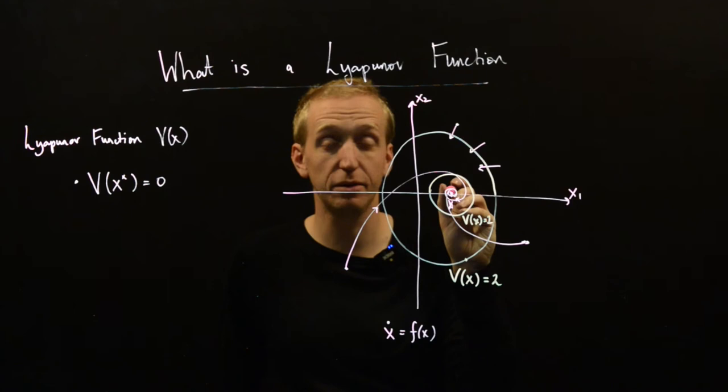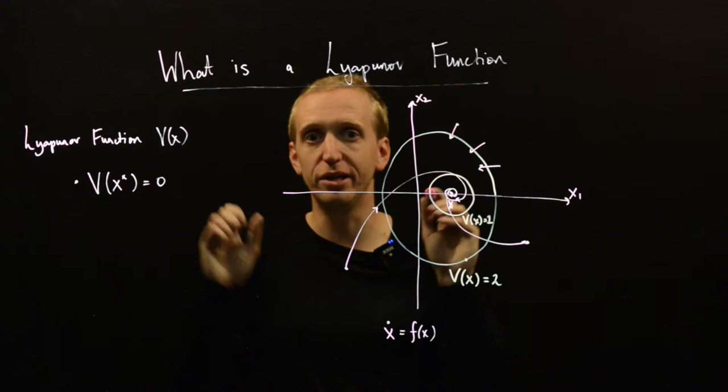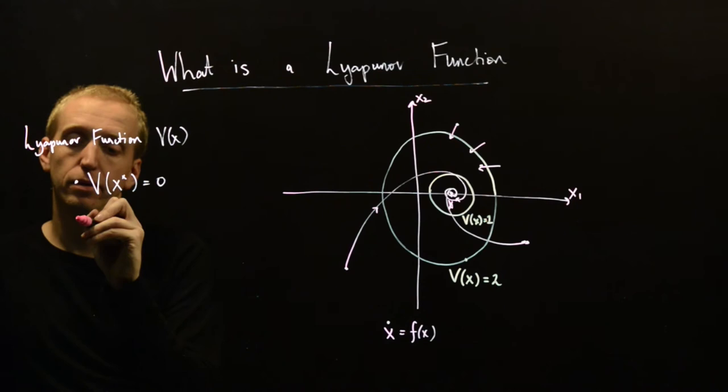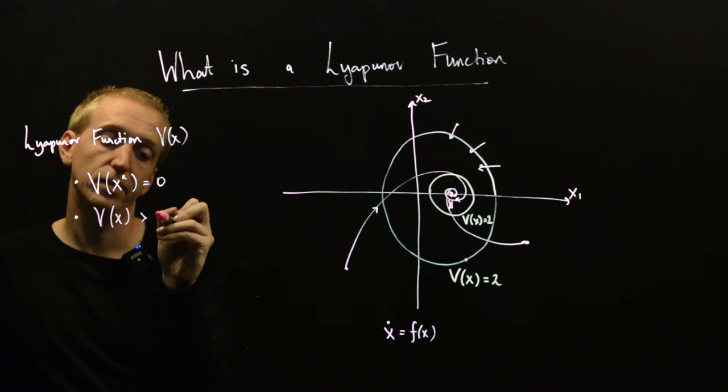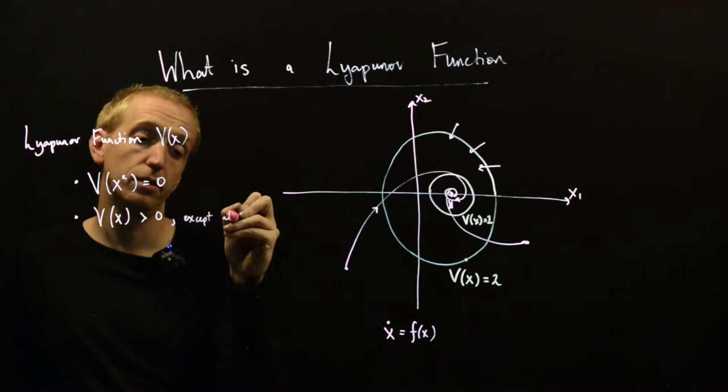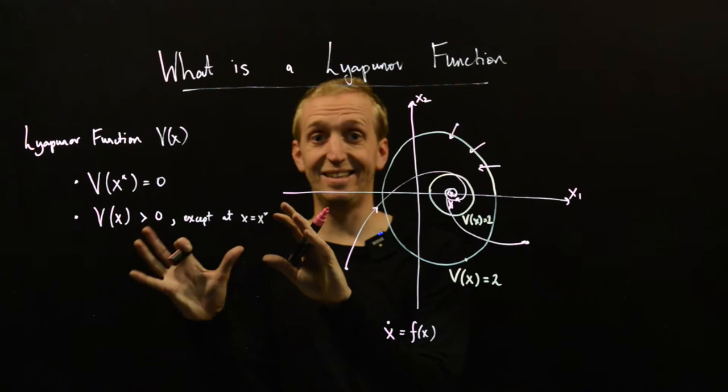Well, we need to have v of x star is equal to zero. So this is just saying that when we evaluate our Lyapunov function at the point x star, which corresponds to our equilibrium point, it has zero energy. So zero energy is going to be our lowest energy value. And then everywhere else,